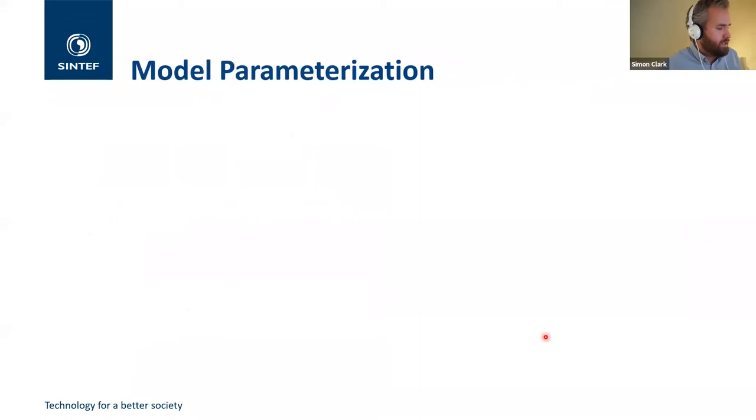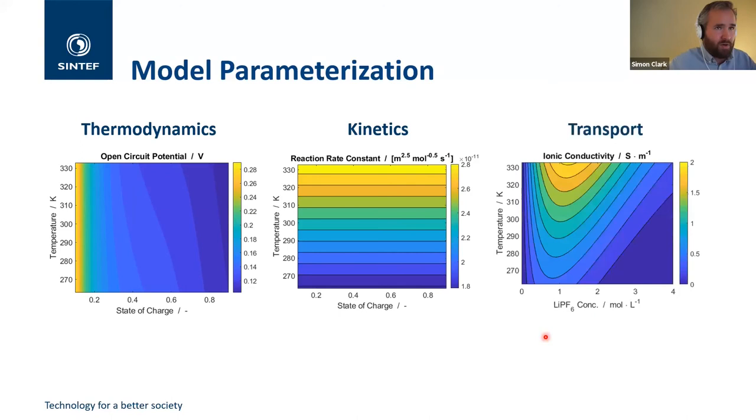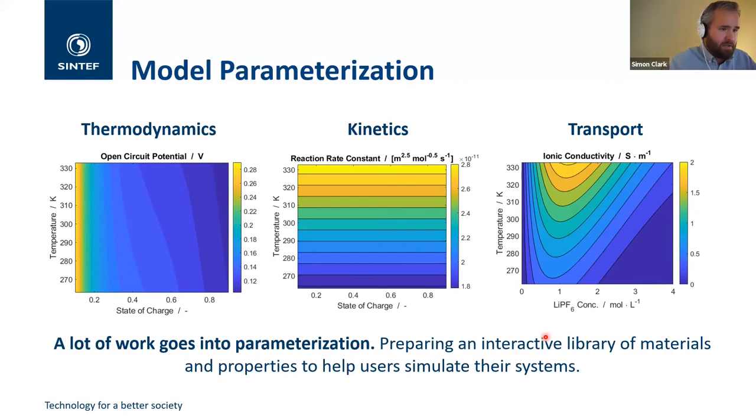So we can set up our system of equations and a lot of these probably look very familiar to people who are used to porous media flow, but one of the downsides is that these models require a lot of parameters. They require parameters about thermodynamics or the open circuit potentials of different electrode materials, they require information about kinetics rate constants, and transport properties like the conductivity of our solutions diffusion coefficients and that takes a lot of work. So with BATMO we're preparing an interactive library of materials and properties to help users simulate their own systems without having to do so much parameterization in their lab themselves.